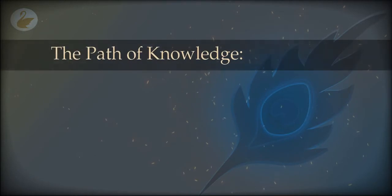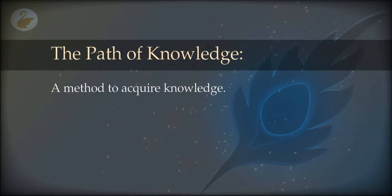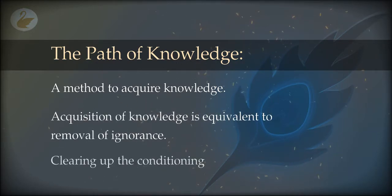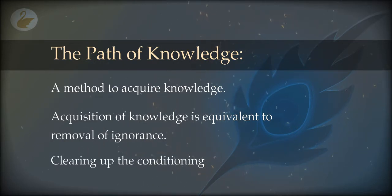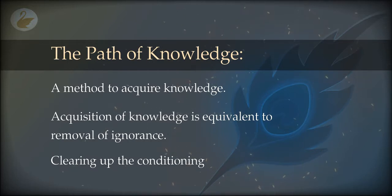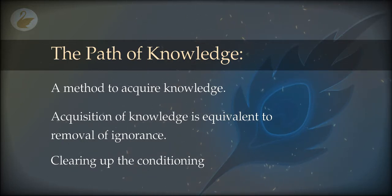The path of knowledge is a method to acquire knowledge. To acquire knowledge means removal of ignorance. Ignorance means the blind beliefs, the fantasies, the ideas and concepts that were incorrectly acquired without critical thinking, without checking — and these are now occluding the real knowledge, which is very simple and I have already given it to you. So the path of knowledge deals with removal of ignorance.